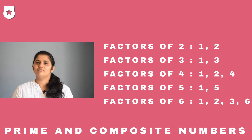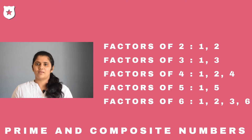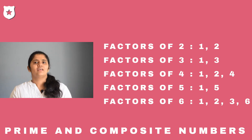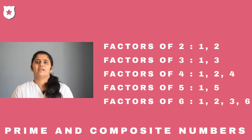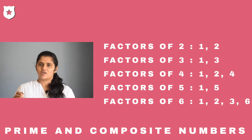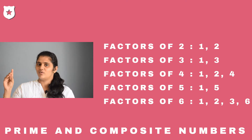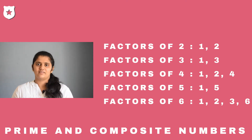Some numbers are having factors as 1 and the number itself. This kind of numbers are called prime numbers. So a prime number has only 2 factors — 1 and the number itself. If a number has more than 2 factors, it is called a composite number. Here 4 and 6 are composite numbers.